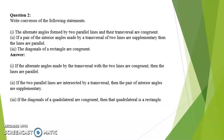Third one. The diagonals of a rectangle are congruent. Answer: If the diagonals of a quadrilateral are congruent, then that quadrilateral is a rectangle.